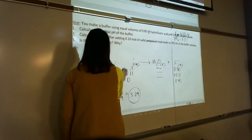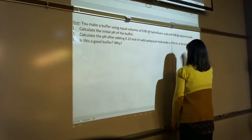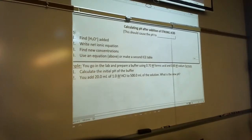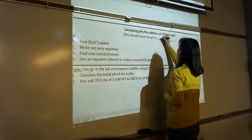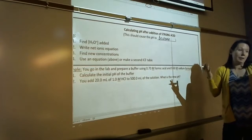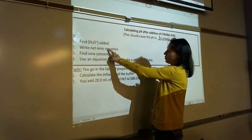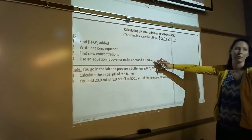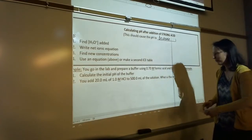Now let's shift gears and talk about what happens when we add acid to a buffer. If we add acid and the pH changes at all, it should decrease. We're adding a strong acid, so that means we're adding H3O+. Write the net ionic equation, find new concentrations, then plug into Henderson-Hasselbalch or make a second ICE table. It's not really worth making a whole new ICE table, but if that works for you, do it.